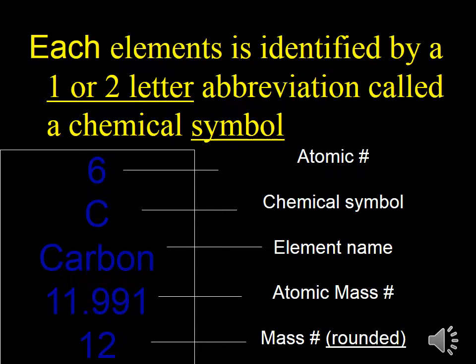Each element is identified by a one or two letter abbreviation called a chemical symbol. In this box, the top number is the atomic number. The C is the chemical symbol. Carbon is the element name. The 11.991 is the atomic mass number, and 12 is the mass number rounded.